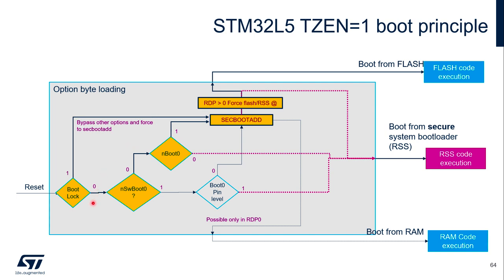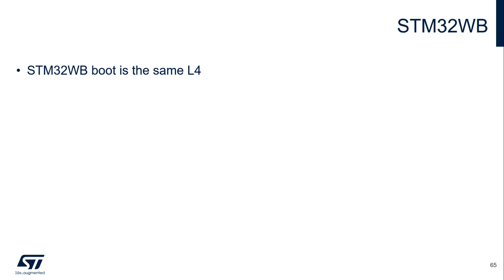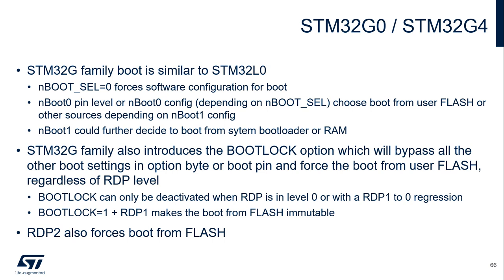When boot lock is activated, it bypasses any configuration from the other boot options or boot pins. The boot mechanism of STM32WB is the same as L4. The boot mechanism on the STM32G family is similar to L0, with the input select bit that can force configuration from software. The G family also introduces the boot lock option, which bypasses all other boot settings in option bytes or boot pins and forces boot from user flash regardless of the RDP level. Boot lock can only be deactivated when RDP stays at level 0 or with an RDP regression from level 1 to level 0, meaning activation of boot lock plus RDP 1 makes the boot from flash immutable — almost the same as RDP level 2. The debug port will automatically be disabled after reset in such a configuration.